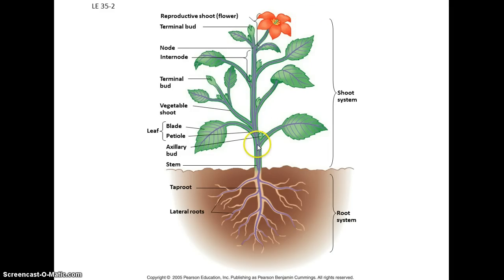Plants have what we describe as a modular form of growth or an indeterminate form of growth in which these modules consisting of the nodes and internode are just added one onto the other. The node is where things, leaves, flowers are attached to the stem and the internode is just the space between nodes.